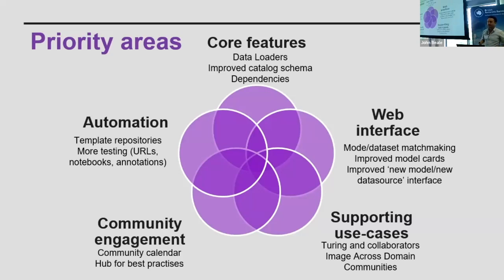In terms of automation, we are working on facilitating how users can create and unlock their own datasets using template repositories, since code needs to be reformatted to be readable for SciVision. For the web interface, a planned future feature — possibly AI-assisted — will suggest which model you can run on a given dataset. We are also working to improve model cards, and community engagement is very important, with the TPS team helping us grow as a community and create a hub of best practices for sharing computer vision models and datasets.